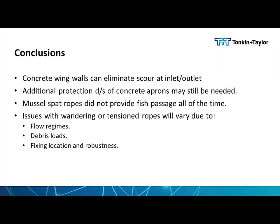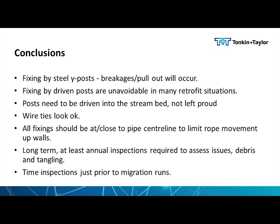In terms of conclusions: wing walls clearly demonstrated that they eliminated erosion immediately at the culvert inlet and outlet, but you still need to think about erosion protection downstream of those culverts. Mussel spat rope didn't provide fish passage all of the time — some structures have blown up the side walls or been suspended — and that will vary depending on your flow regime, your debris load, and your fixing location. Also note that using warathas in the ground in situations with heavy bed load, they're going to get blown out. Where there are no concrete headwalls you have nothing to fix to, so you have to use supplies, but driving them deeper into the ground would have probably prevented a bunch of those issues.